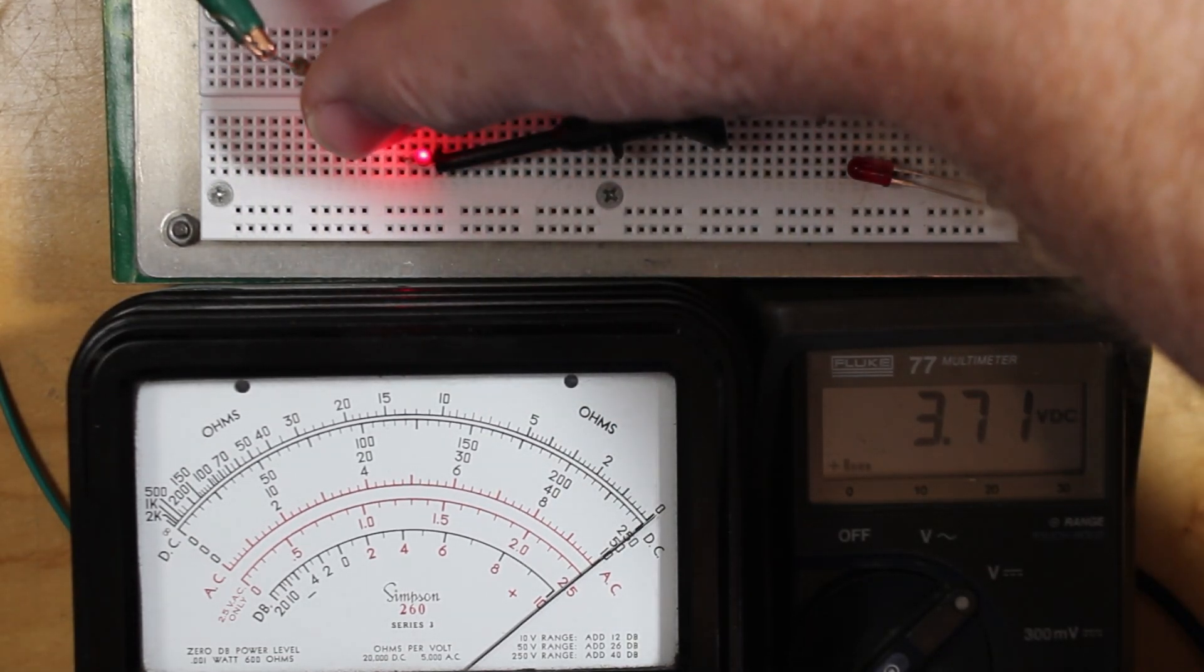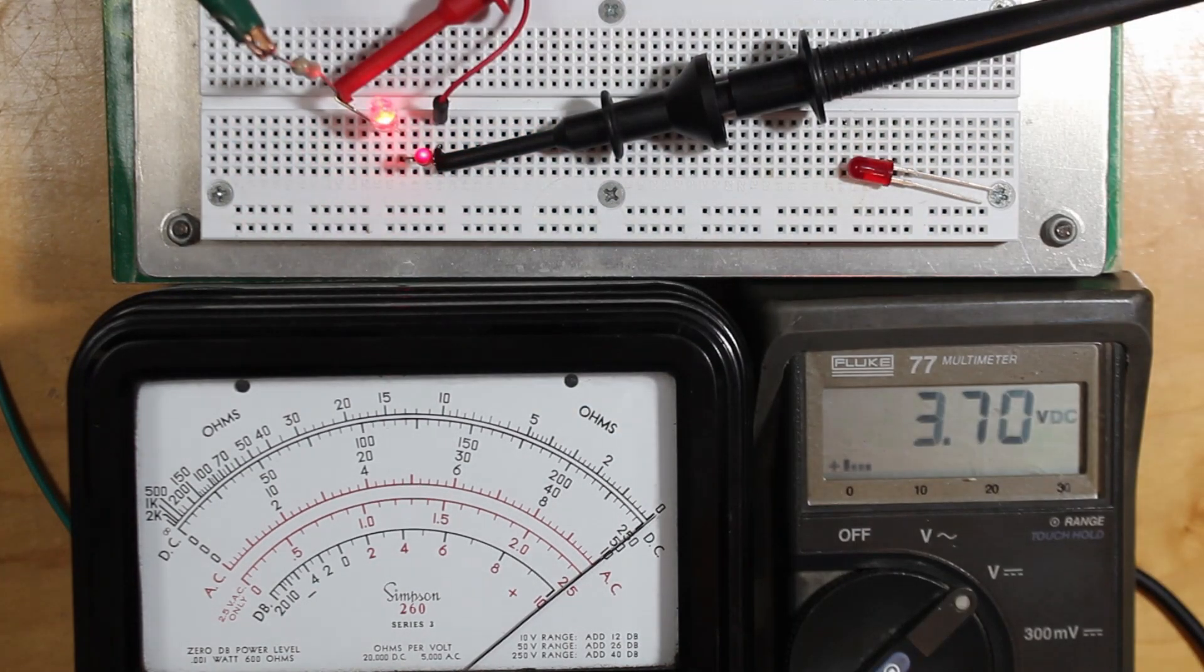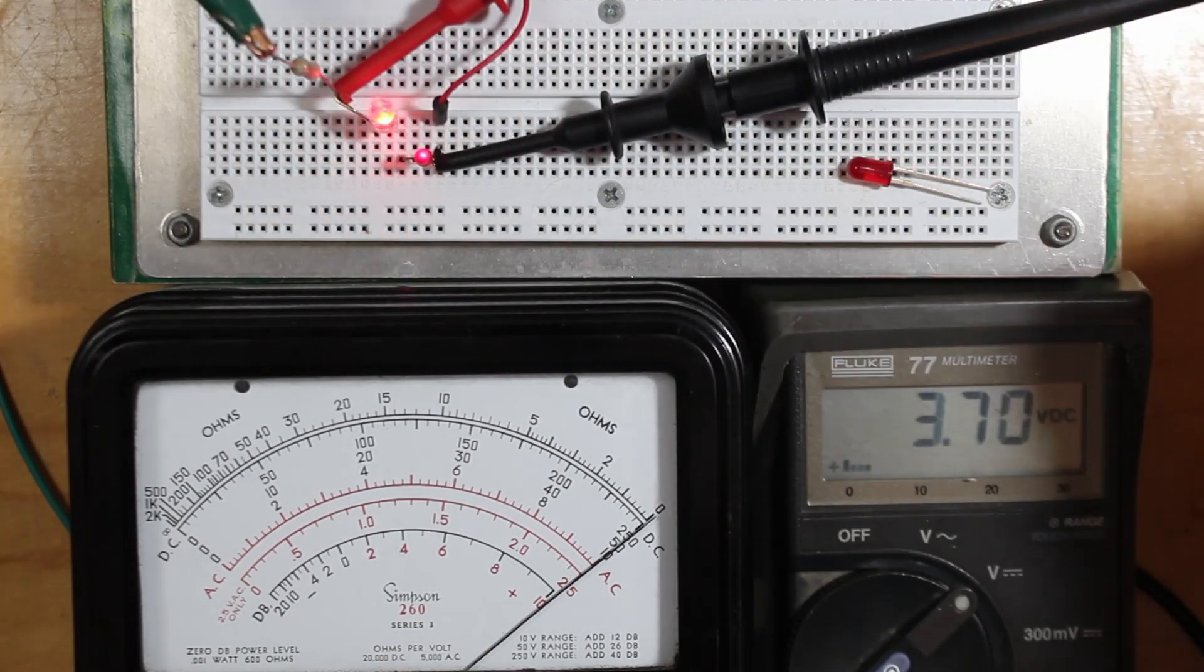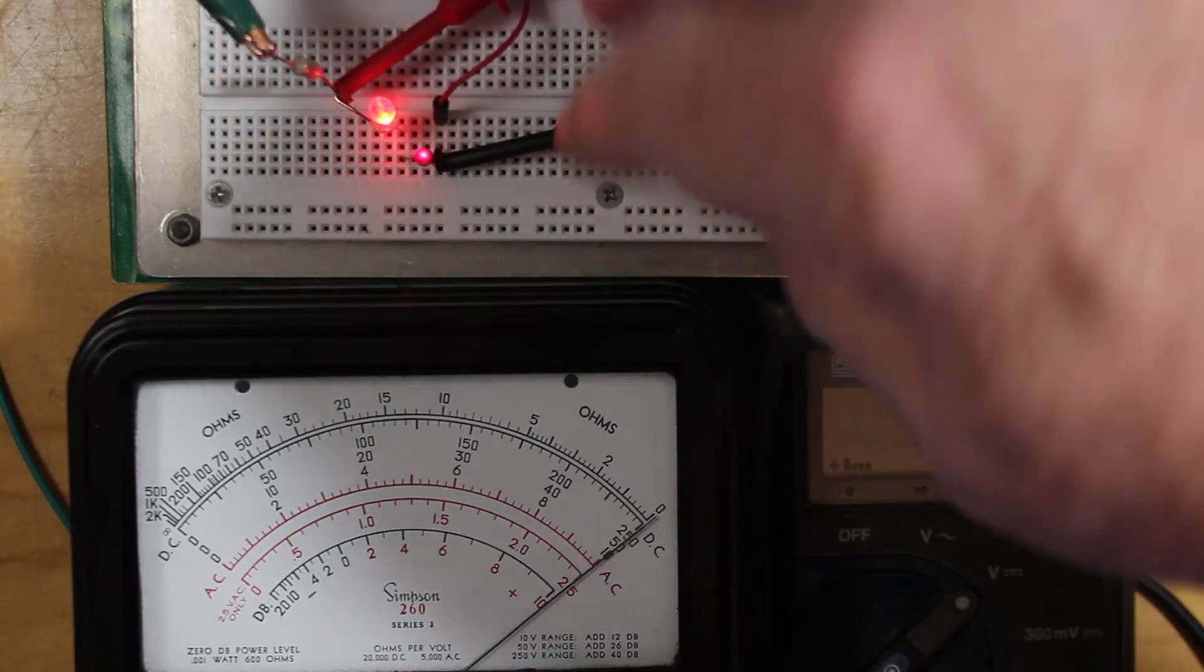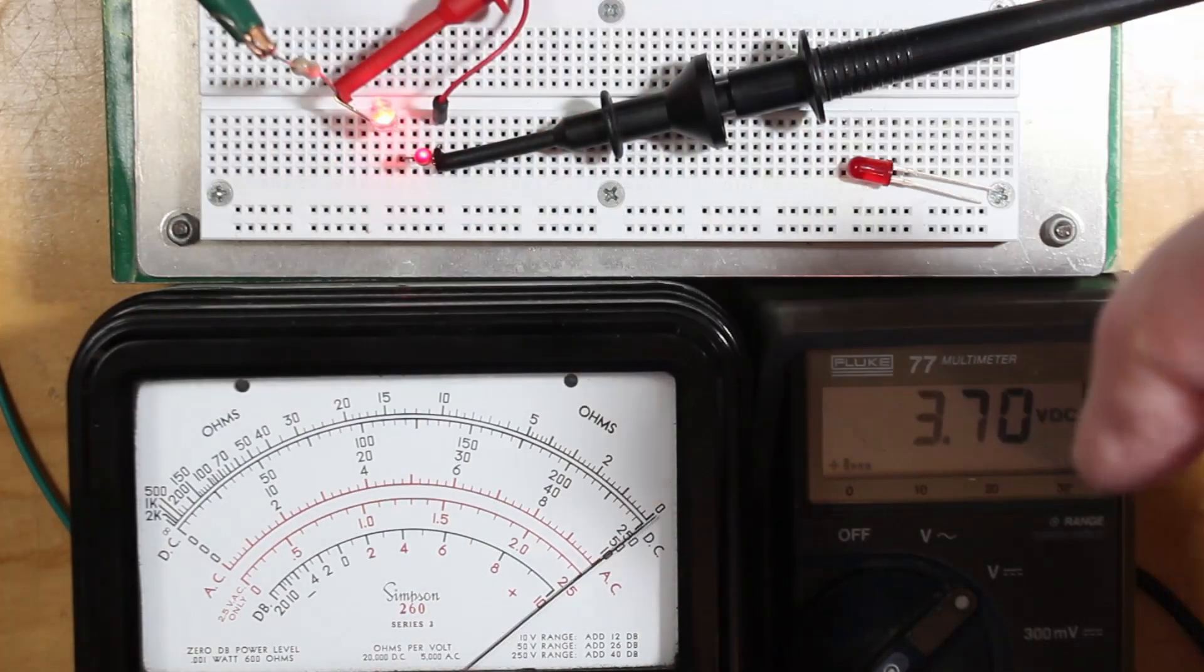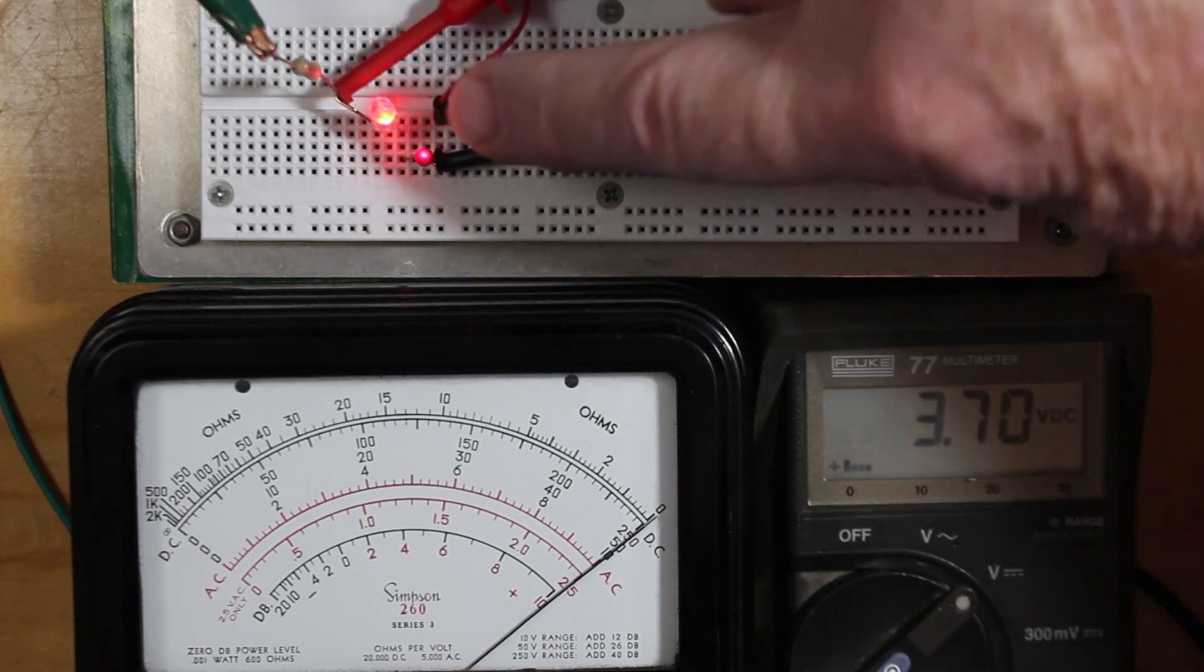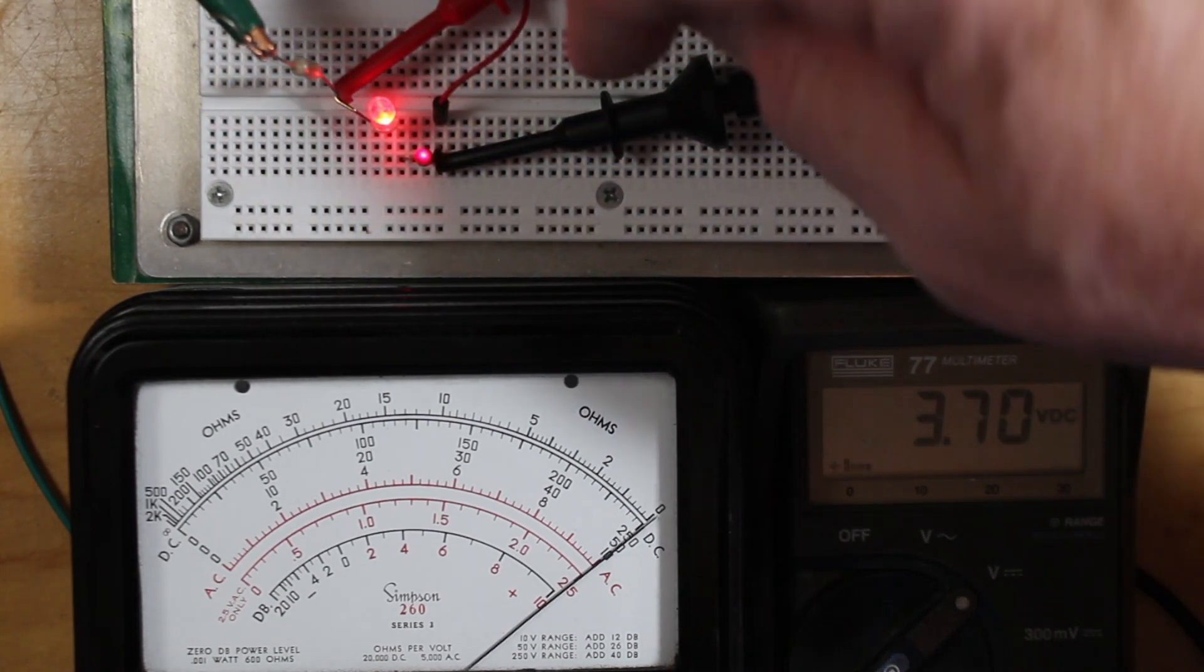We can see across both of them there—these are hooked in series, so they're getting exactly the same amount of current. Current flows through from ground to the positive side. They might have a slightly different voltage across them, but that would be partly because of the colors.